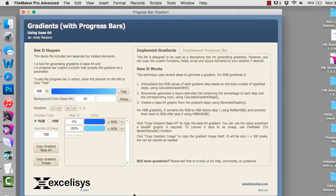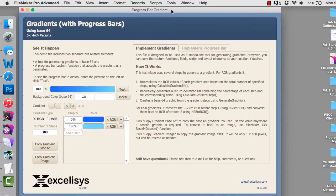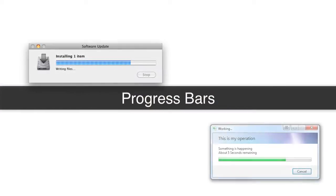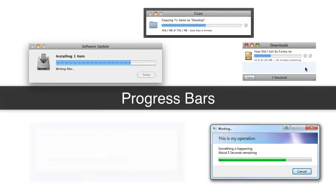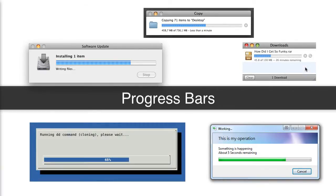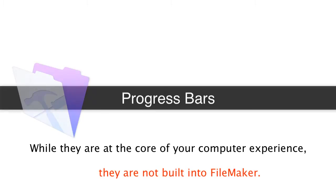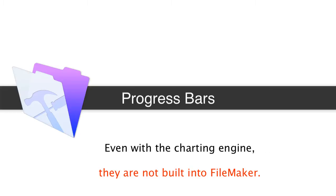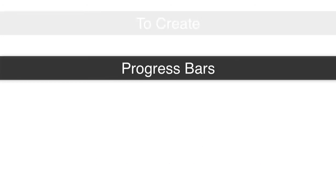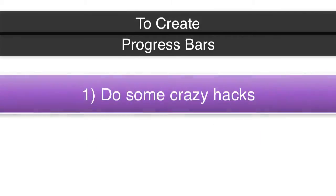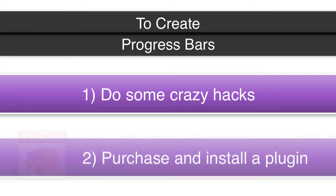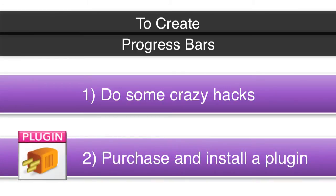This tool allows us to easily create progress bars and implement them into our FileMaker solution. Progress bars are those little bars that you see when you copy files or do any process that takes more than five or ten seconds. As much as progress bars are a core part of your computer experience, they're not built into the FileMaker platform — not even in its built-in charting engine. To create them you'd have to do some crazy hacks or purchase a plug-in.